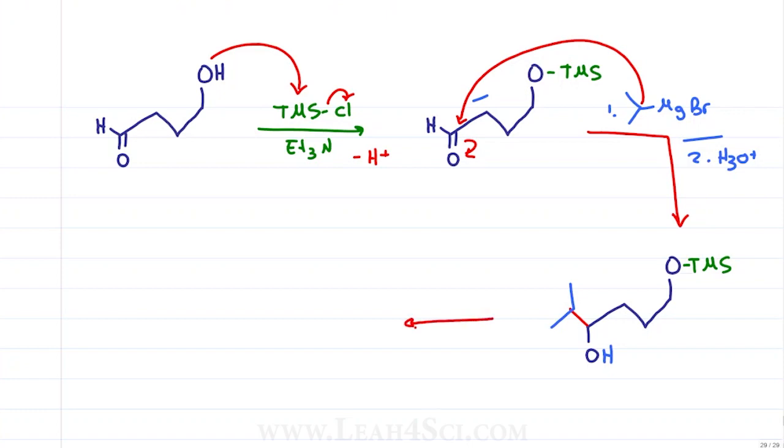Finally, in the last step, you simply write TBAF to show that we're using the tert-butyl ammonium fluoride to remove the TMS to give you your final product with the alcohol reformed and the incoming Grignard exactly where you want it to be with no side reactions. Regardless of which method you follow, I want you to recognize the pattern here of a 1-2-3 reaction. Step 1, we protect the alcohol, step 2, we react the rest of the molecule and step 3, we deprotect to reform the alcohol.